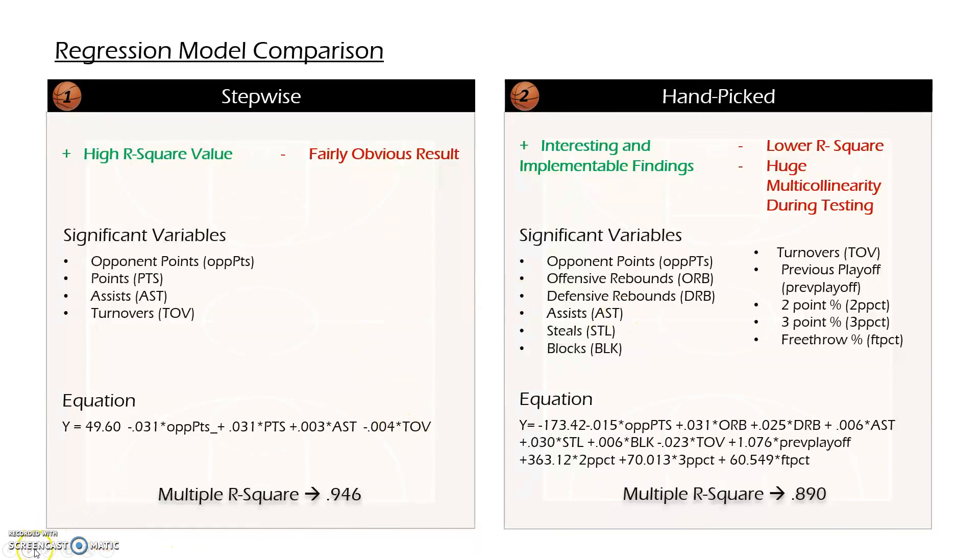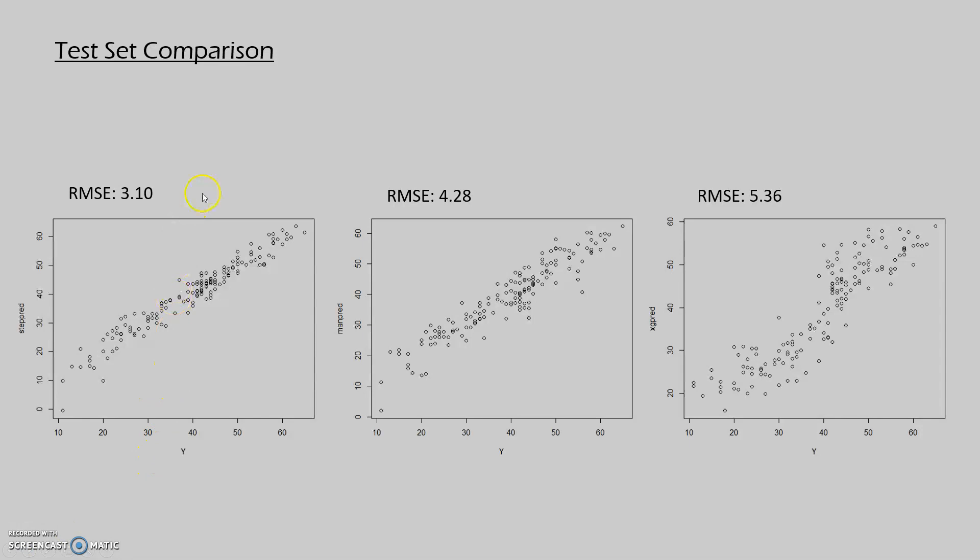I also thought this model might generalize slightly better because it was made up of the different components. However, on the next slide, you'll see that I was wrong. So using the test data set that I had blocked off, I evaluated how the stepwise model, the manual picked or my handpicked model, and a decision tree regression would perform on the test set.